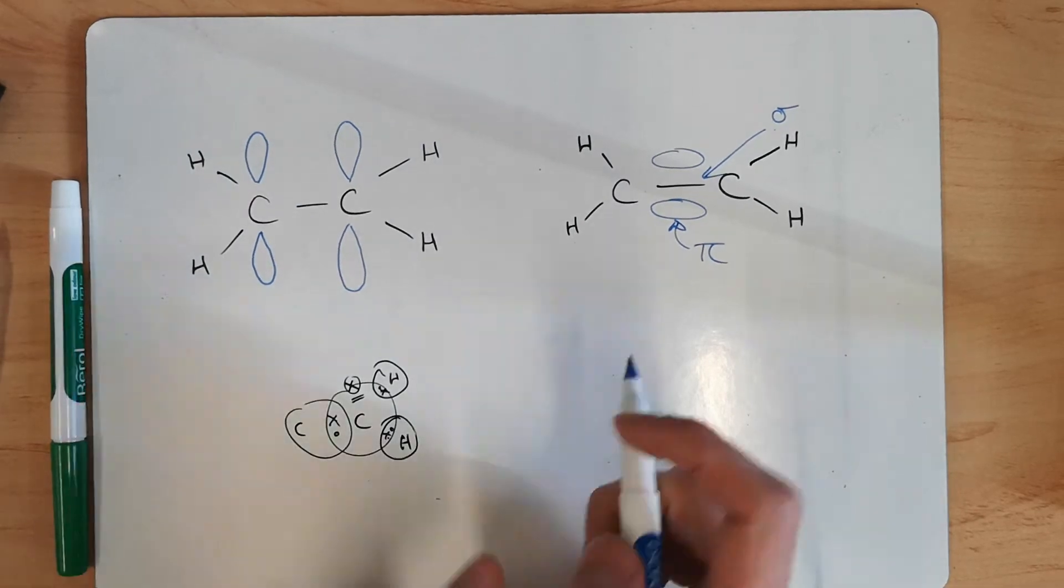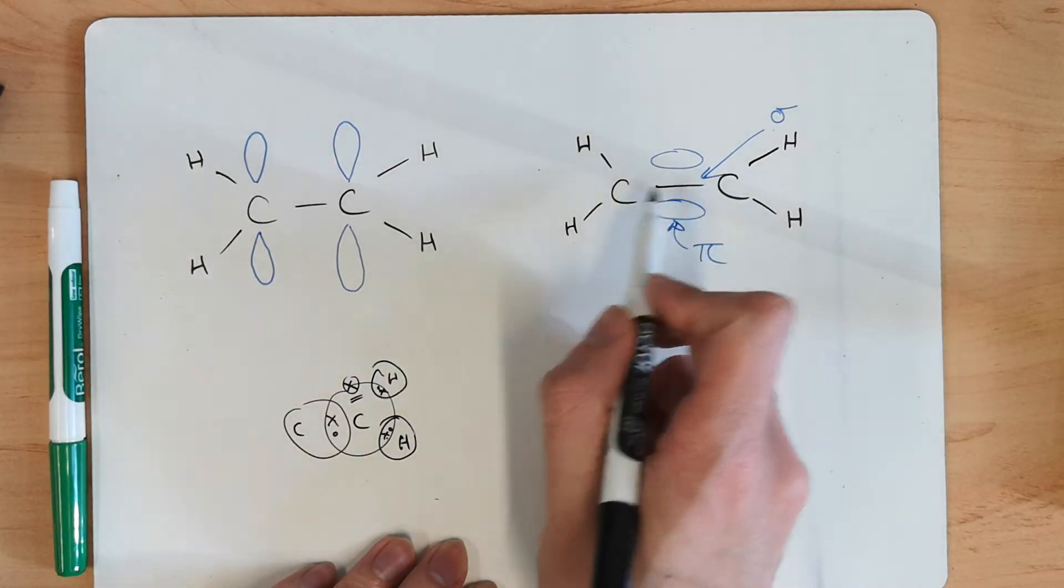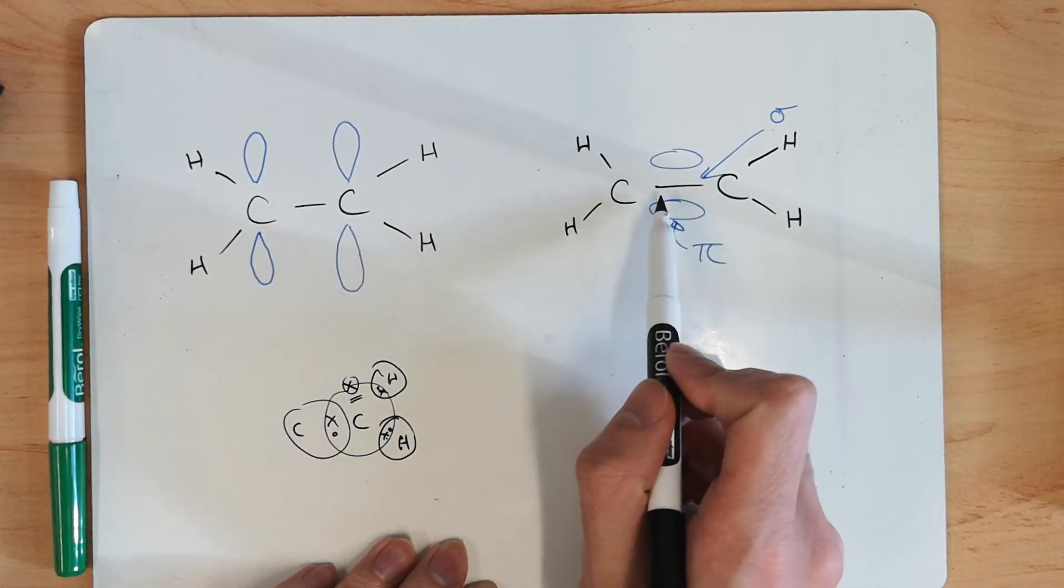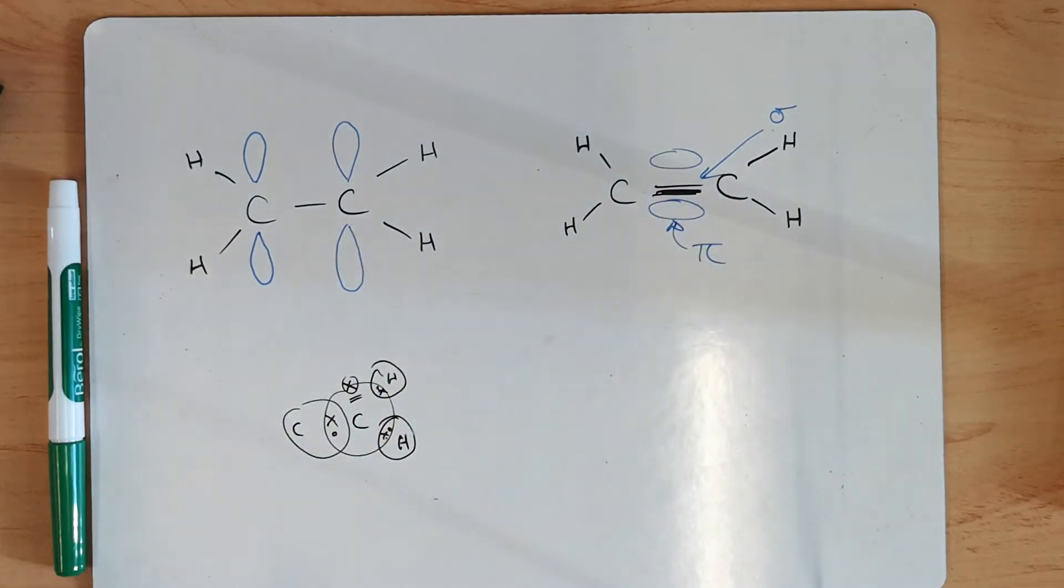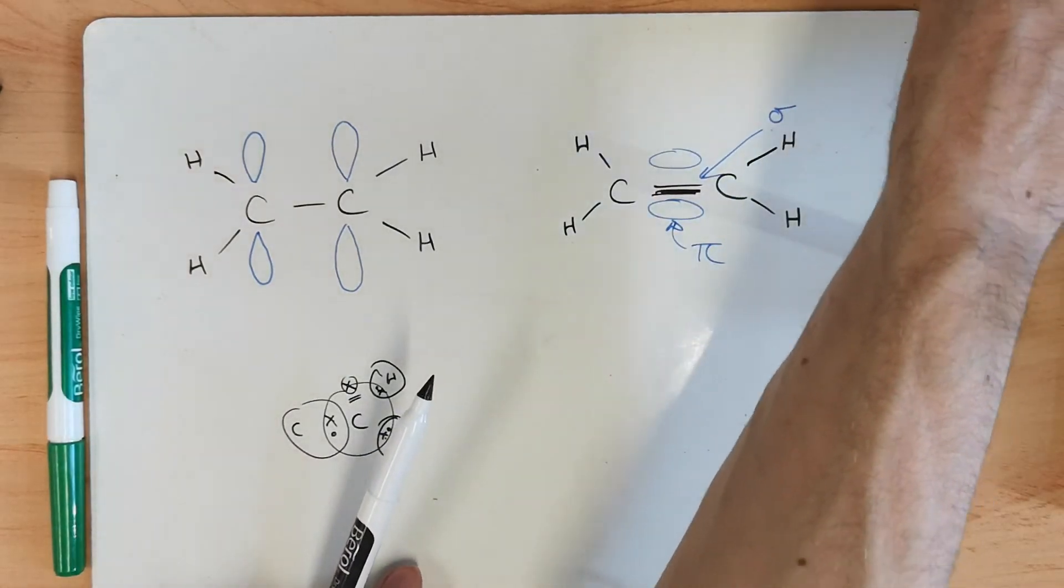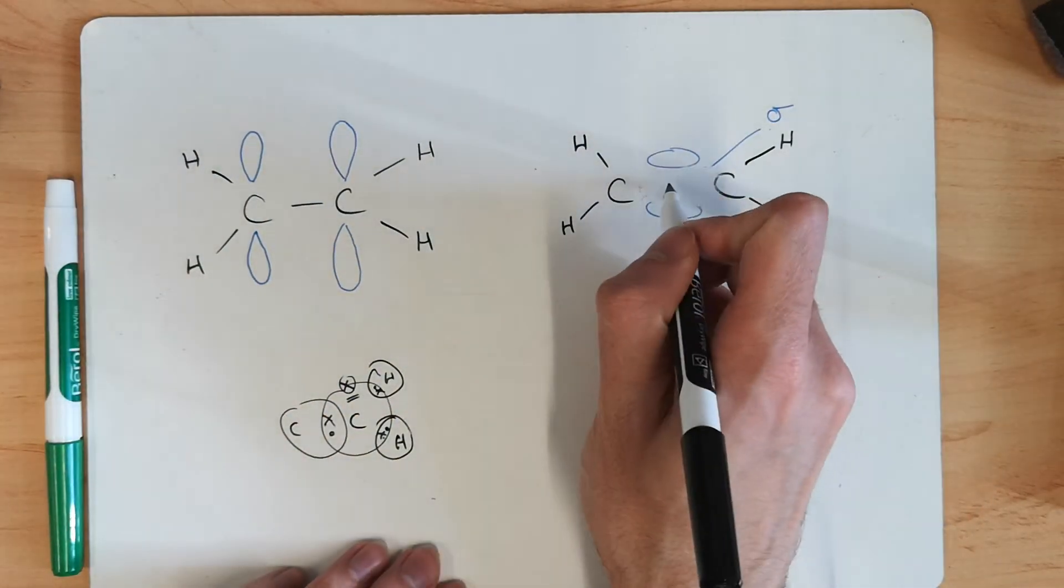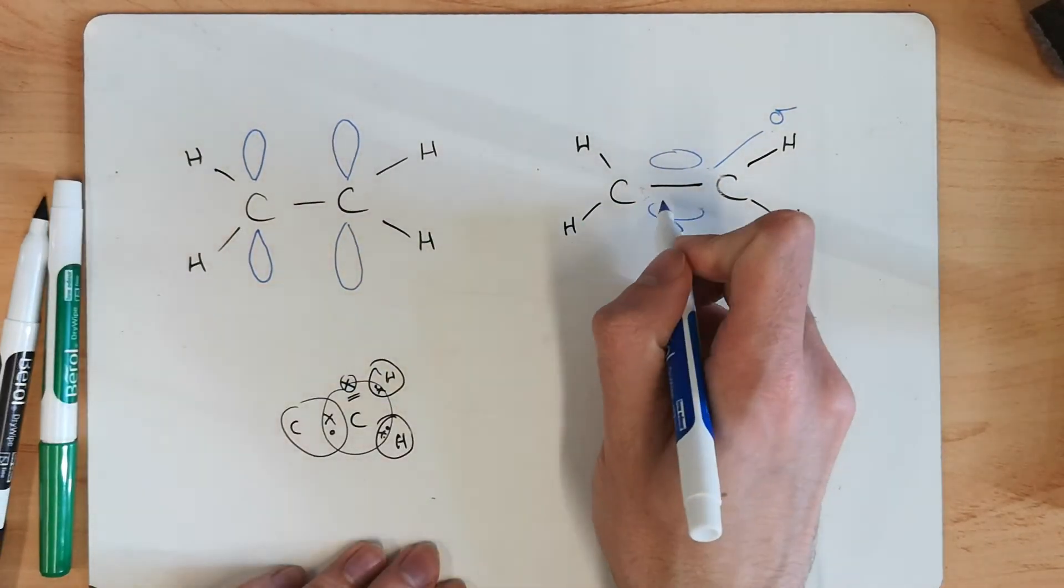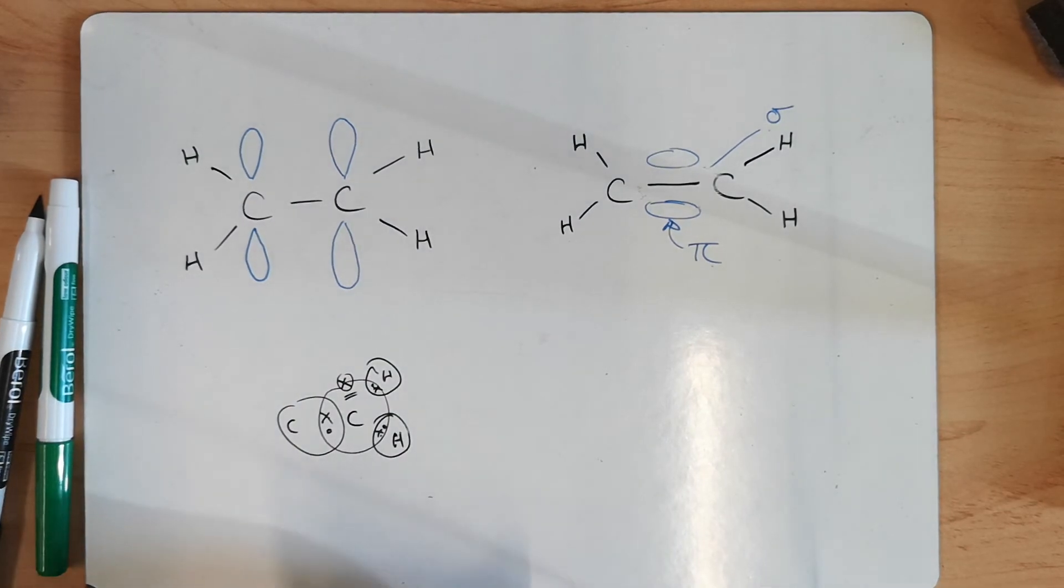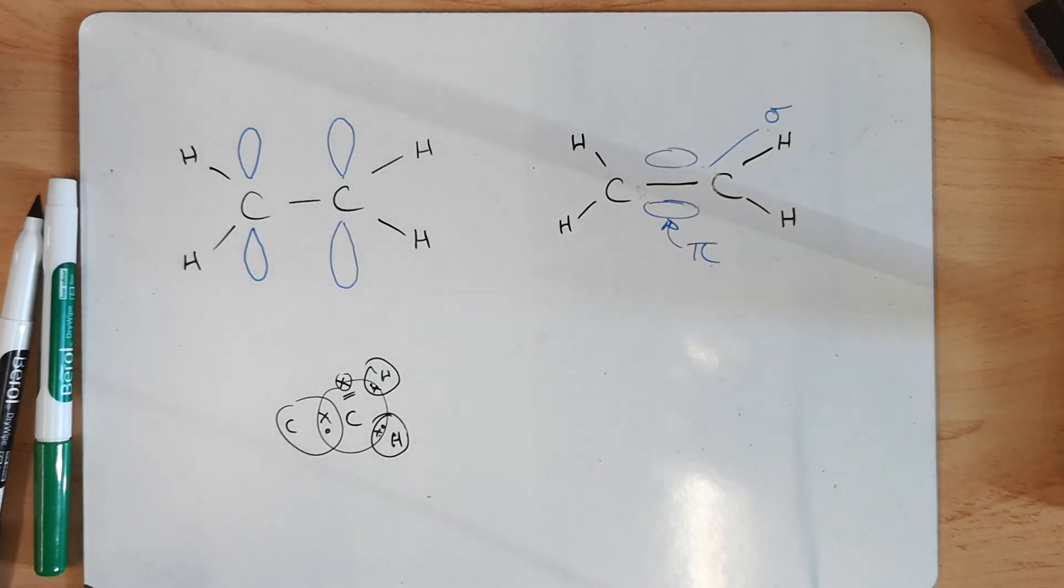And that is bonding in alkenes. A common mistake students make when they draw this image, when they're trying to represent the pi bond, is that they put a double bond in like that. So, they put two and then a pi bond, and what you draw on there is a triple bond. So, that single line in this diagram, that represents our sigma, and we've only got one sigma. So, the two ovals above and below, they represent our pi bond, and that is bonding in alkenes.